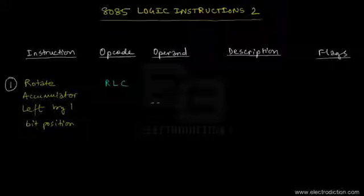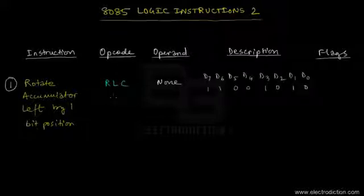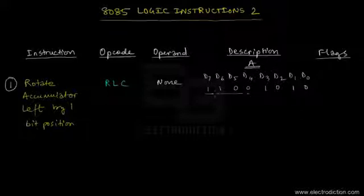The RLC instruction doesn't have any operands. Let me tell you what this instruction actually does with an example. The 8-bit data content of the accumulator register is shown here — register A is an 8-bit register, and you can see the 8-bit data content in the accumulator.